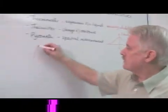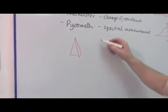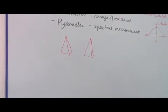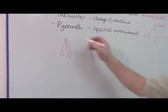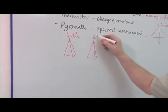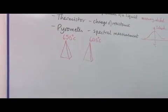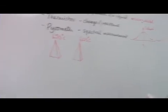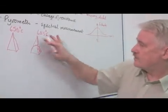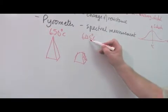You might have seen something like this occasionally, used by a potter. He will have a series of little pottery towers. And this one is 650 degrees Celsius, and this one is 645 degrees Celsius. These are the temperatures at which these things melt. And as soon as this one goes like that, into a heap, then he knows it is more than 645.